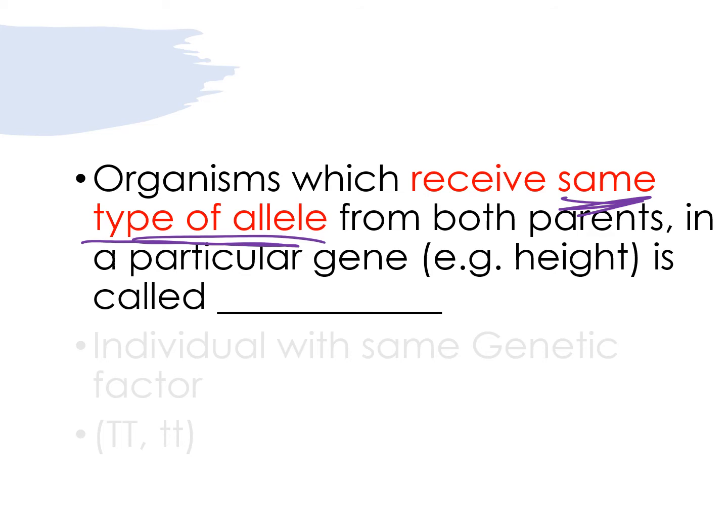For example, for the height, such as big T, big T, or small t, small t, same types of allele. What do we call them? We call them homozygot.